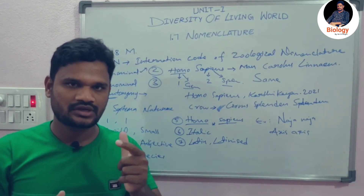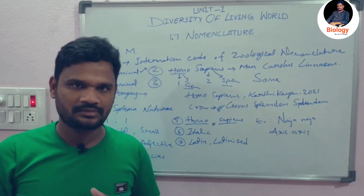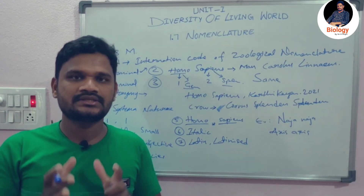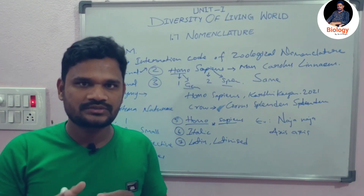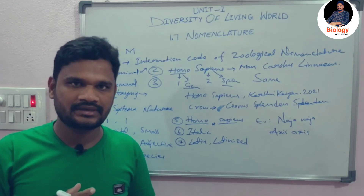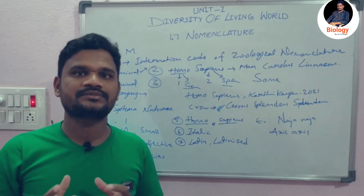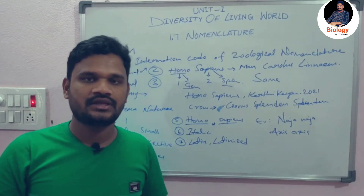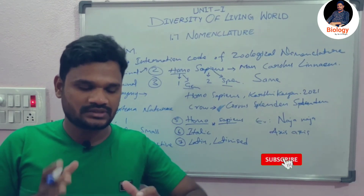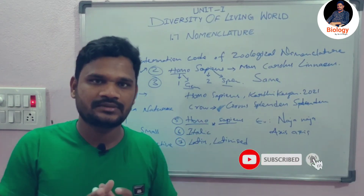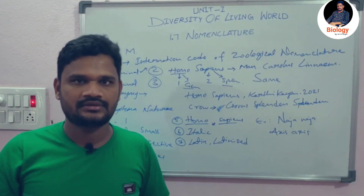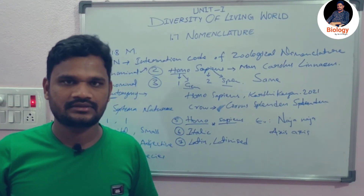So, this is about nomenclature. We have three types: binomial nomenclature, where the organism's name consists of two words; trinomial nomenclature, where the organism's name contains three words; and tautonymy, where the two-worded name has the genus and species name the same. Thank you.